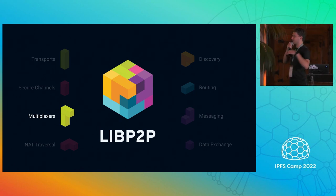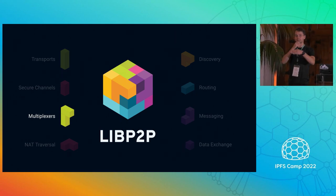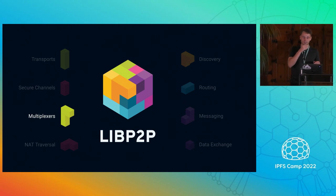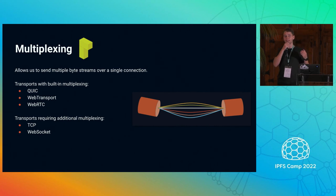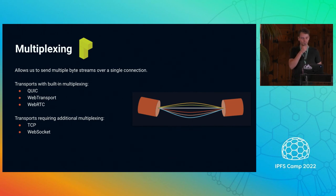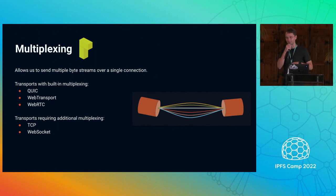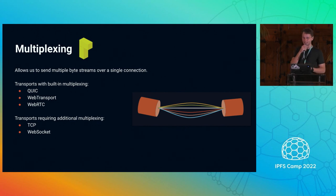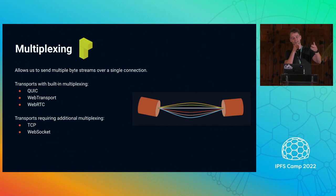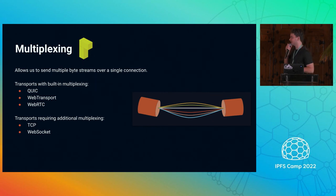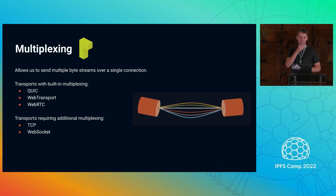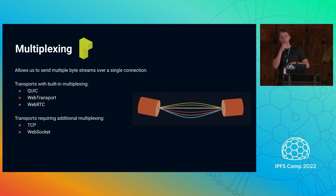We can send bytes from A to B and we can secure those bytes on the wire. Now we want to make great use of a single connection. Given that libp2p has many protocols running on top, we want to give each protocol a virtual connection — the perspective of being the only one on the connection. We achieve that with multiplexing. Some transports already give that — QUIC and WebTransport — but others like TCP and WebSockets need to be upgraded with our own muxers like yamux and mplex.